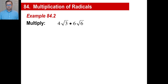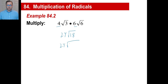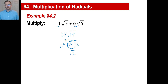4√3 times 6√6: we go 4 times 6, which is 24, then 3 times 6 under the radical gives us √18. But you don't stop there — look at the radicand and make sure you can't simplify it. We break 18 into 9 times 2. The square root of 9 is 3, so it comes out front. Outside we have 24 times 3, which is 72. Our simplified answer is 72√2.